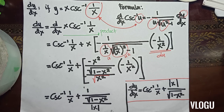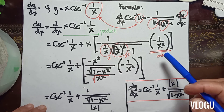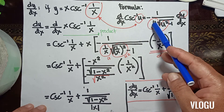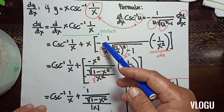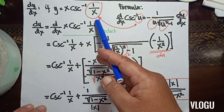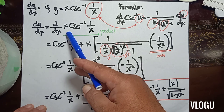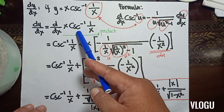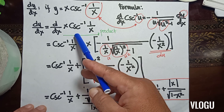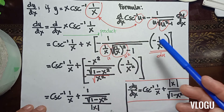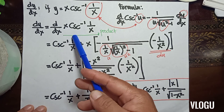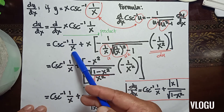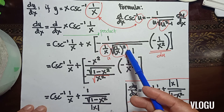The next example: y is equal to x times cosecant inverse of (1/x). The formula for cosecant inverse u is negative 1 over u times the square root of u squared minus 1, times du/dx. Our u is 1/x. Since we have a product of x and cosecant inverse, we use the product rule: derivative of x, which is 1, times cosecant inverse (1/x), plus x times the derivative of cosecant inverse.